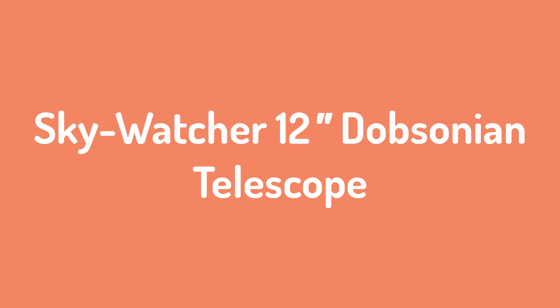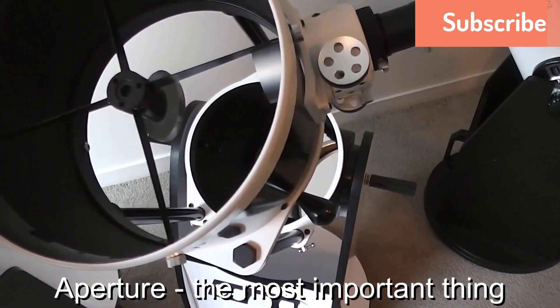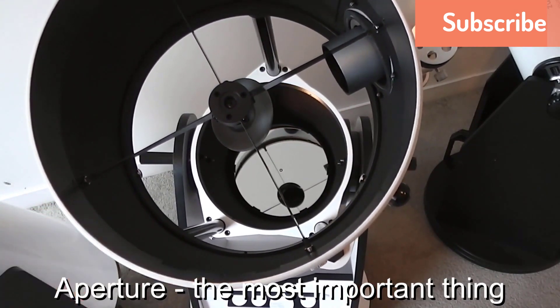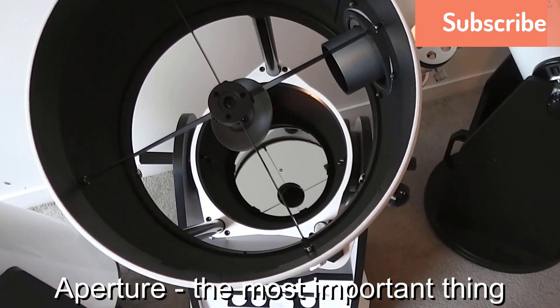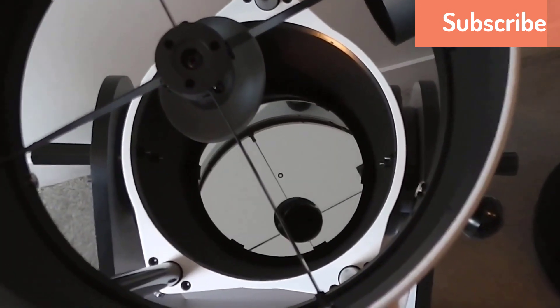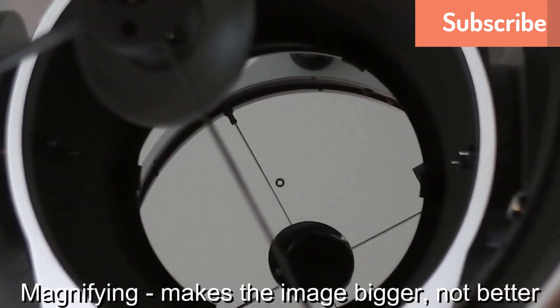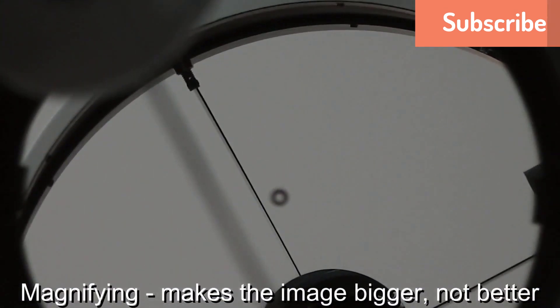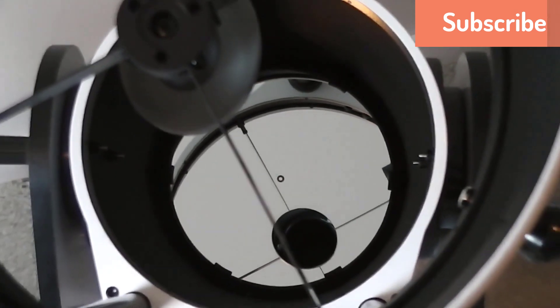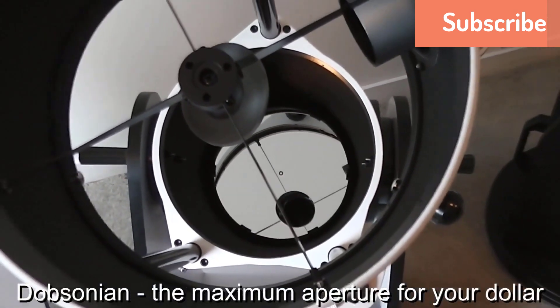Number one: Sky-Watcher 12-inch Dobsonian Telescope. The Sky-Watcher 12-inch Dobsonian Telescope is a durable telescope that collapses for easy transport. It has an f/5, 1500 millimeter focal length and 720x magnification. It also includes a 2-inch Crayford style focuser with a 1.25 inch adapter and an 8x50 RA viewfinder.